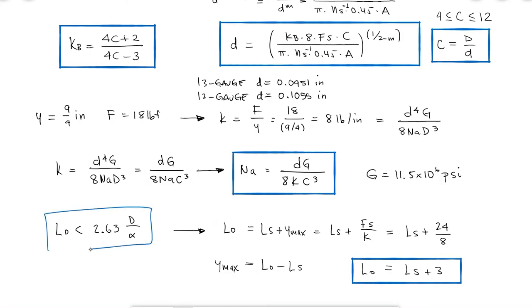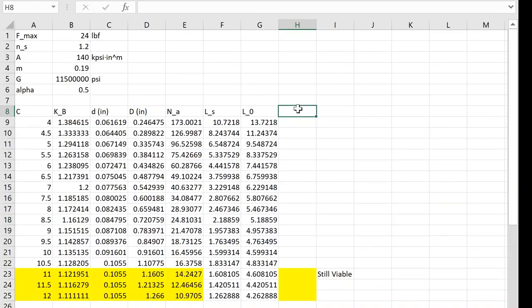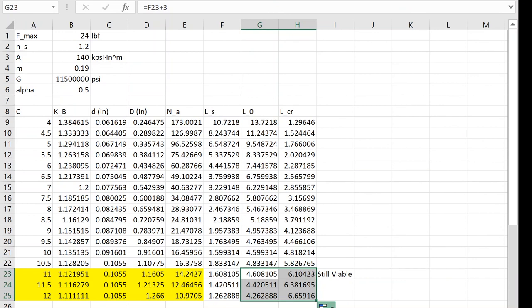And going back to the critical length equation that we derived for steels, I can check that my free length is below that critical length value. For every case, the free length is lower than the critical length. So anything with a spring index over 11 and under 12 works for this design.